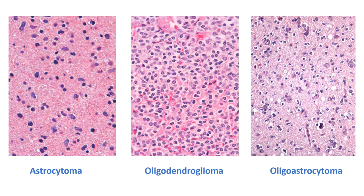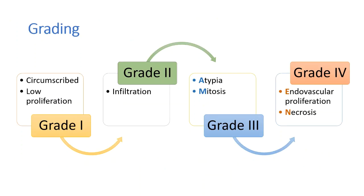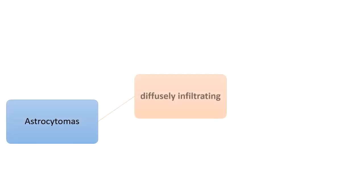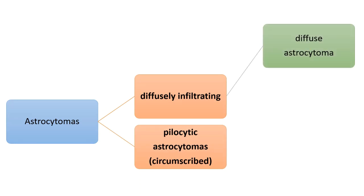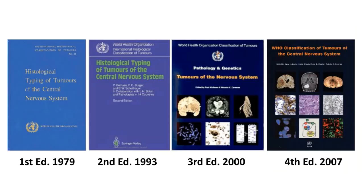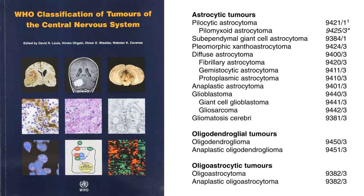These tumors are graded based on multiple morphological criteria. Grade 1 tumors are well circumscribed, have low proliferation index, and typically do not recur once completely removed. When these tumors start infiltrating into the adjacent parenchyma, they are called diffusely infiltrating gliomas or grade 2. Grade 3 and grade 4 criteria can be remembered by the mnemonic AMEN. Grade 3 or anaplastic tumors have atypia and mitosis, and grade 4 tumors additionally have endovascular proliferation and/or necrosis. For example, astrocytic lineage tumors are graded as grade 1 pilocytic astrocytomas, grade 2 diffuse astrocytomas, grade 3 anaplastic astrocytomas, and grade 4 glioblastomas. The WHO classification of CNS tumors prior to 2016 was based on these principles of identifying and grading a tumor based on morphology.